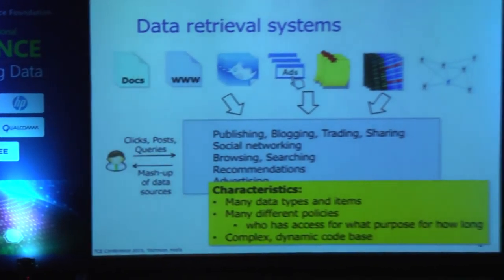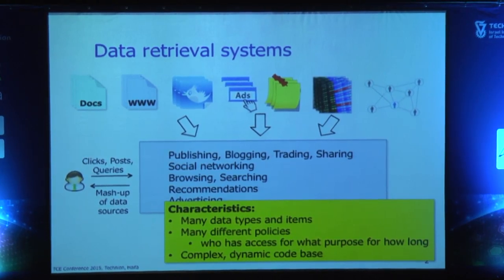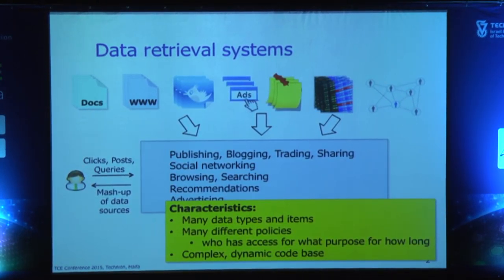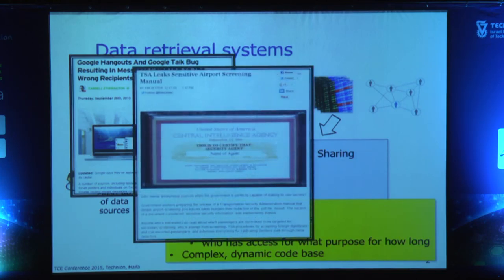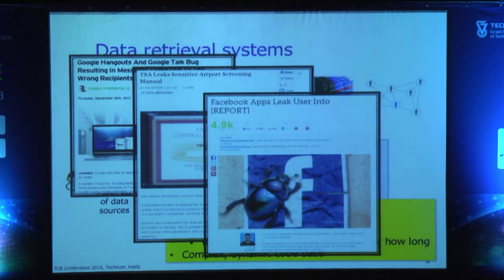What characterizes these systems is that there are many data types and even more data items, many different policies that apply — essentially saying who has access to a particular item, for what purpose, and for how long — and a very complex and dynamic codebase under constant development. The result is often mishaps that are widely publicized, reporting that information was released to parties that should not have had access, which is embarrassing to providers, may come with legal fees, and undermines public confidence in information technology.